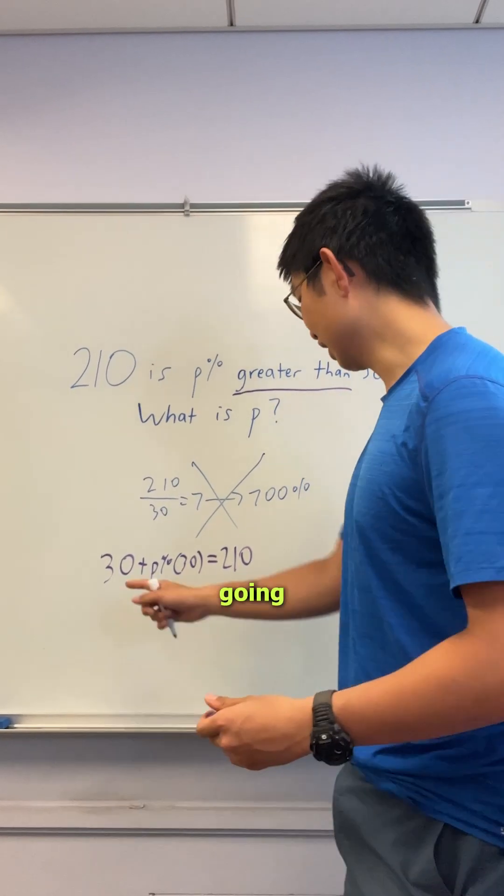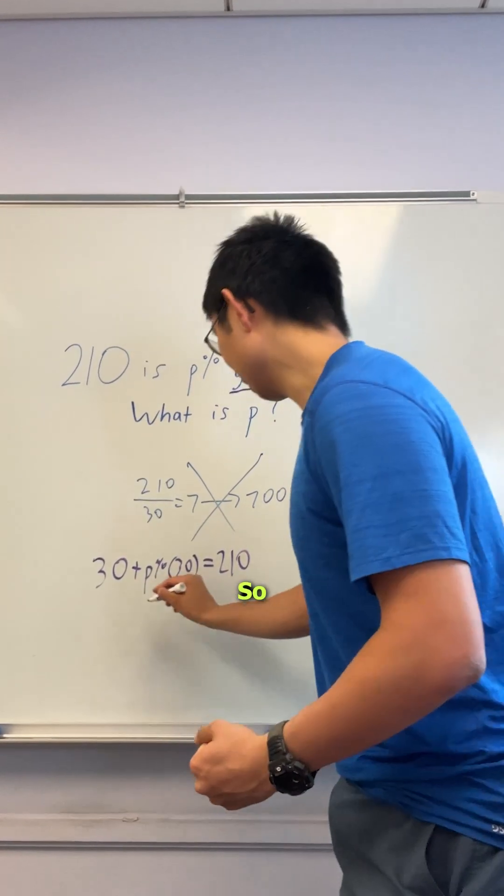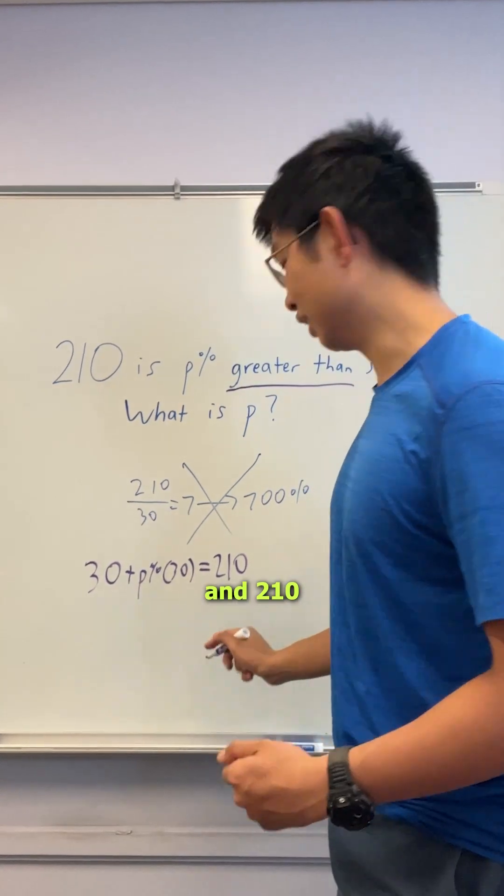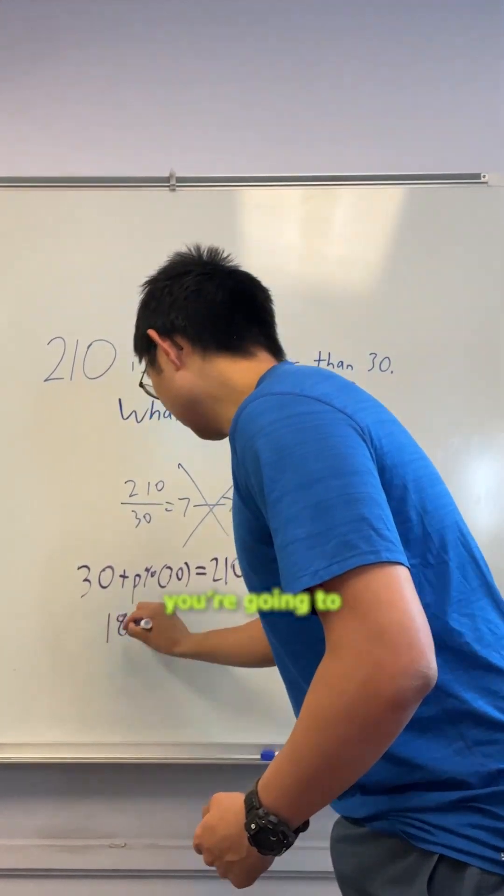Because there's an addition going on, you're going to take the difference. The difference between 30 and 210 is 180. You're going to ask yourself, what percent of 30 is 180?